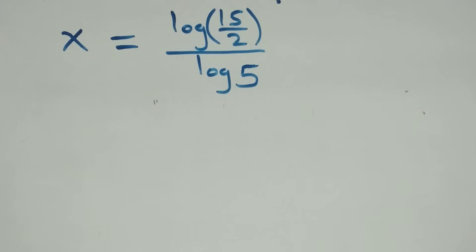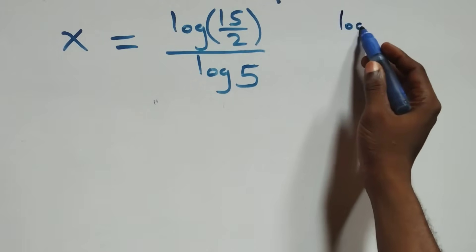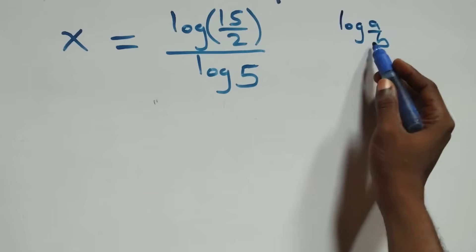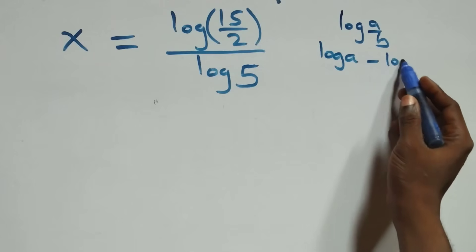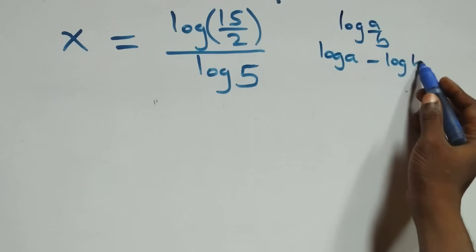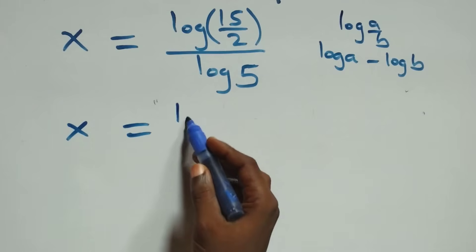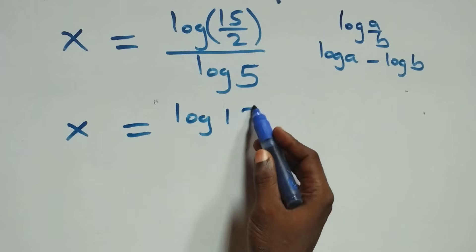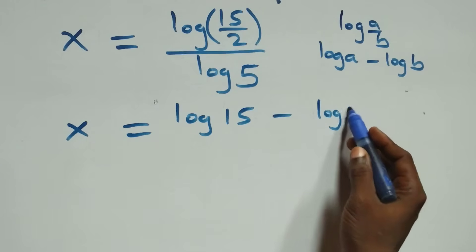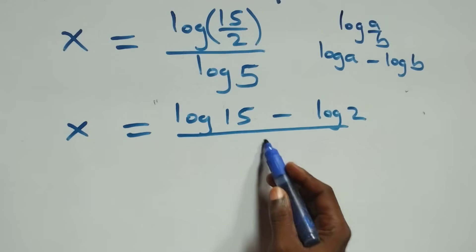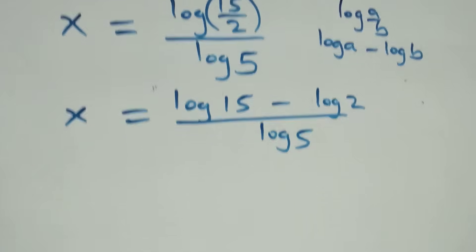The next step follows from the law of logarithms: log(a/b) equals log a minus log b. So log(15/2) over log 5 becomes x equals to log 15 minus log 2, over log 5.